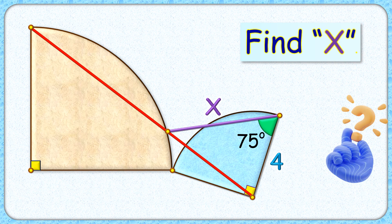It's an excellent question. Given to us are these two quadrants sharing a common vertex. This red line segment is joining this vertex to the center, and this purple line segment is joining the vertex to this point of intersection. It's making an angle of 75 degrees with the radius of the quadrant, which is given as 4 centimeters. With this limited data we have to find the length of this purple line segment, or the value of x.